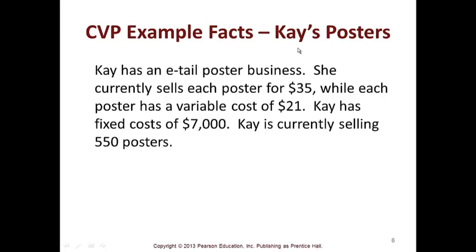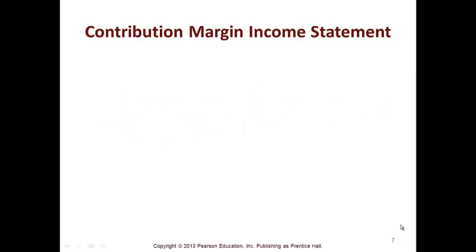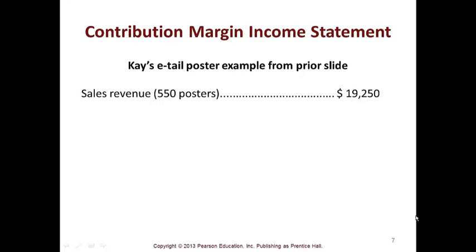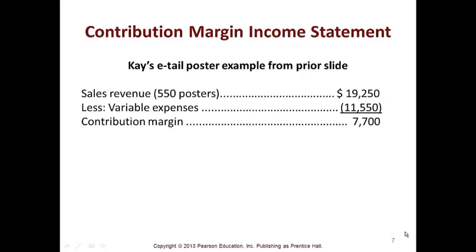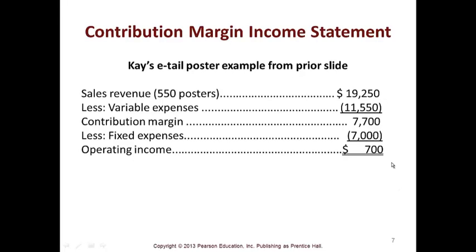Here's an example. Let's make up a company called Kay's Posters. Kay has an e-tail poster business. She currently sells a poster for $35, while each poster has a variable cost of $21. Kay has fixed costs of $7,000 and she is currently selling 550 posters. The contribution margin statement shows sales revenue less variable expenses, giving you your contribution margin. Then you take out your fixed expenses and you can see that operating income is $700 when you sell 550 posters.